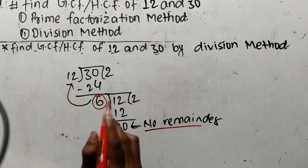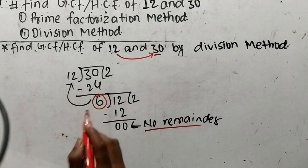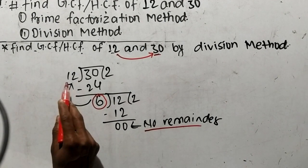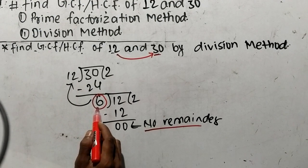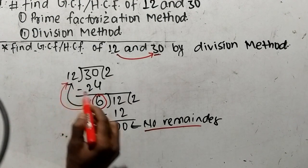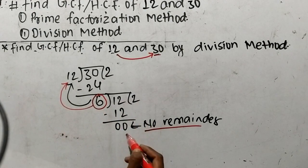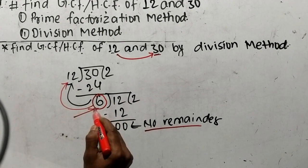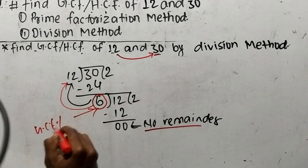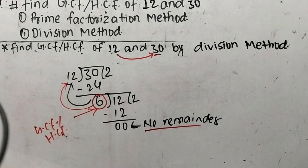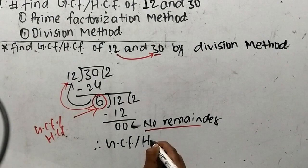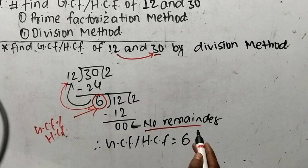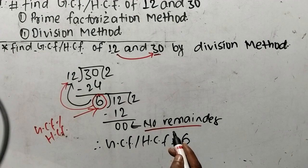While finding out GCF by division method, first you have to divide the greater number with the lesser number. If a remainder comes, then you have to again divide the divisor with the remainder. Dividing 30 by 12 gives a remainder of 6, so we divide the divisor 12 by 6, which gives 6 times 2 equals 12 with no remainder. Since the divisor 6 leaves no remainder at last, therefore GCF or HCF is equal to 6. In this way we can find out GCF by division method.